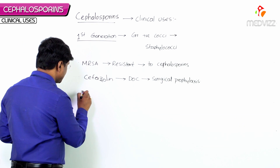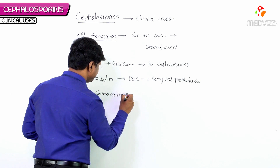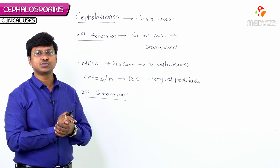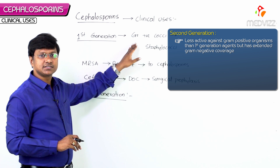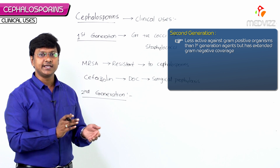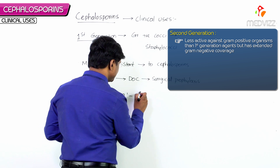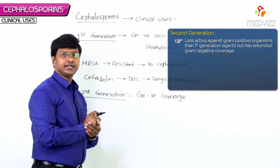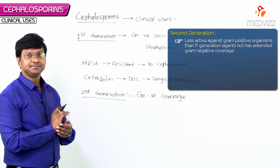Now let me discuss the clinical uses of the second generation cephalosporins. This group of drugs is less active against gram-positive organisms compared to the first generation agents, but the second generation cephalosporins have extended gram-negative coverage.